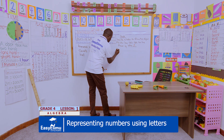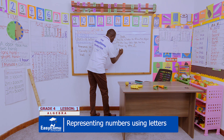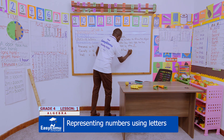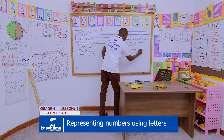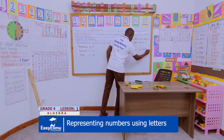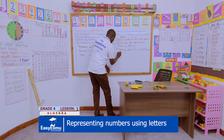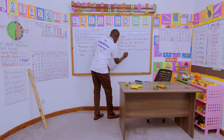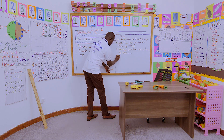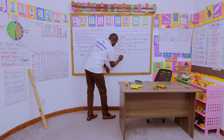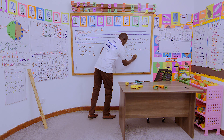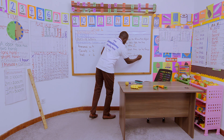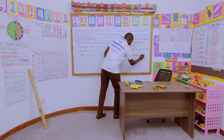Number two: Tom has cows. Cows can be shown by a letter — which letter can we use to show cows? Number three: oranges are in a basket. Oranges are in a basket, and oranges can be shown by a letter.